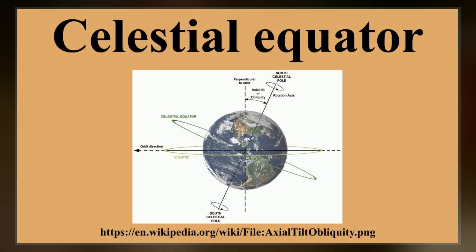In other words, the celestial equator is an abstract projection of the terrestrial equator into outer space.